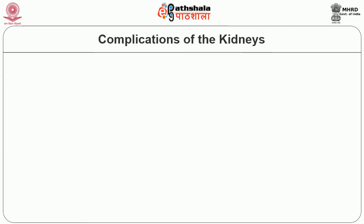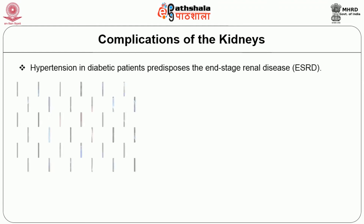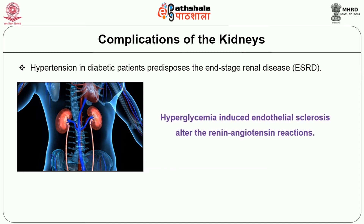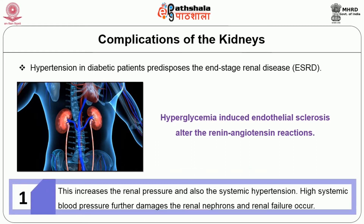Moving on to the complications of the kidneys: hypertension in diabetic patients predisposes to end-stage renal disease (ESRD). Hyperglycemia-induced endothelial sclerosis alters the renin-angiotensin reactions, increasing renal pressure and systemic hypertension. High systemic blood pressure further damages the renal nephrons and renal failure occurs.